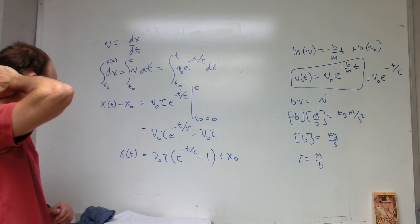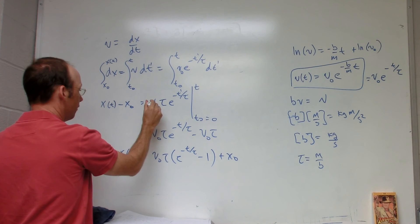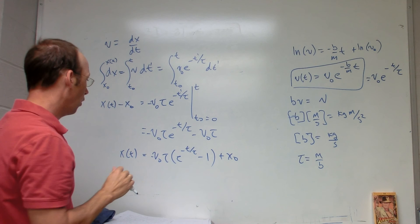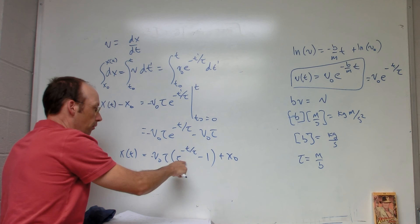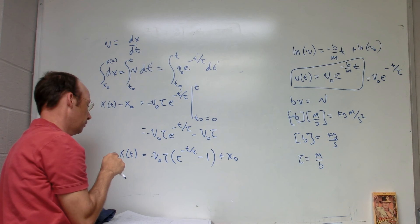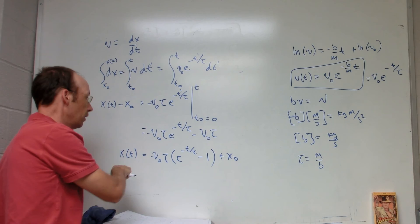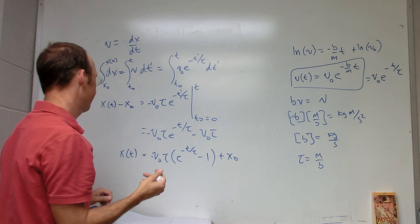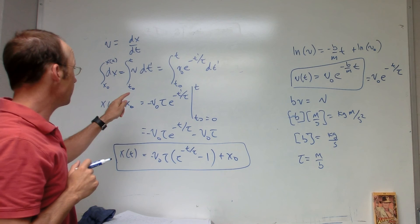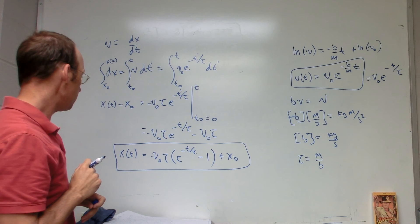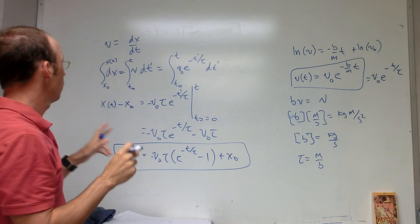Let's check: as t gets really large, the exponential term goes to zero, leaving -1, so the position stops changing — the ball eventually comes to rest. That's the x position as a function of time. I'll also solve this same problem numerically in class so we can verify the answer. That's the simplest possible case for drag, solved exactly — next we'll do a slightly more complicated case.